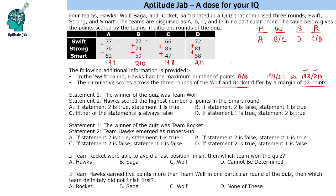Now let us take the second condition: Hawk is Team B, with a total of 210. In this case, Wolf and Rocket will be 199 and 211, that is Teams A and D. The remaining team, C, is Team Saga.